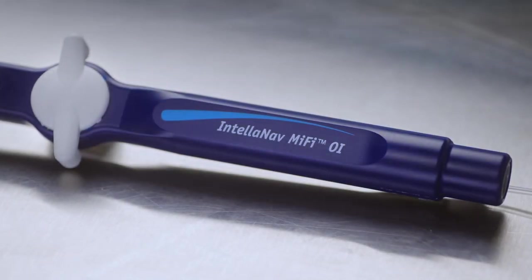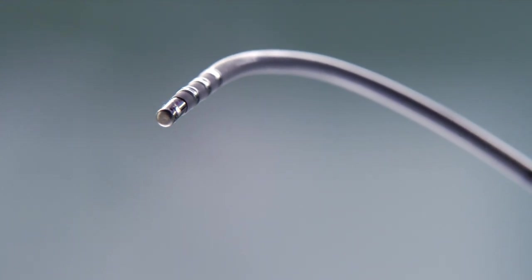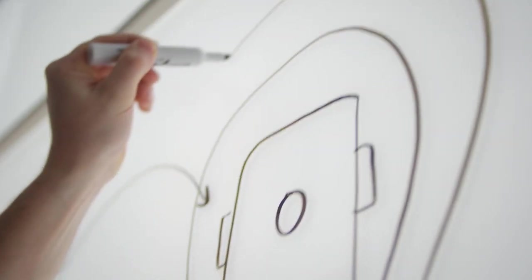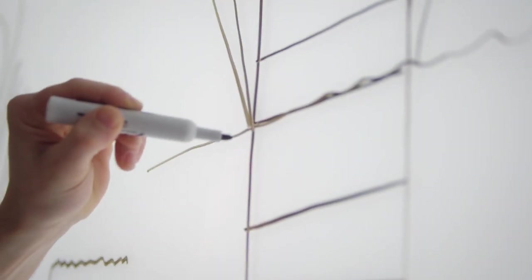Our therapeutic catheter is an IntelliNav MiFi catheter. It has three miniature electrodes on the distal tip. Instead of measuring impedance from the tip of the catheter to a patch placed on the surface of the patient, we actually measure impedance by injecting a small amount of current from the tip of the catheter and sinking that current on the proximal ring of the catheter.